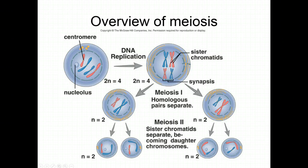Some key things to note when considering the process of meiosis is that there are some similarities with mitosis, but then there are some differences. One similarity with mitosis is that the cells that are going to do meiosis will go through an interphase of G1, S, and G2. They will reproduce their DNA to make duplicated chromosomes containing the sister chromatids.